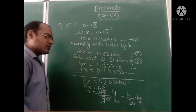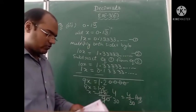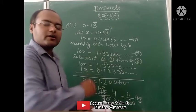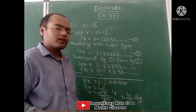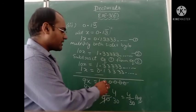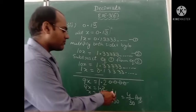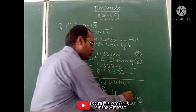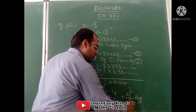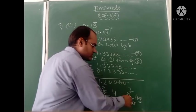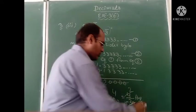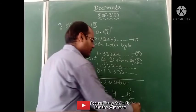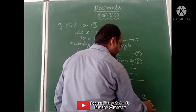So this is the fraction. We can cancel further — dividing by 3 gives 4 upon 30. We can cancel further with 2: 2 into 4 is 2, and 2 into 30 is 15. So the final answer is 2 upon 15.